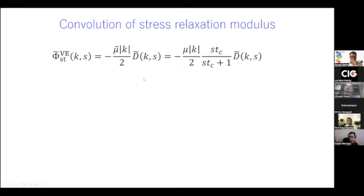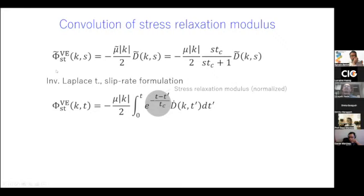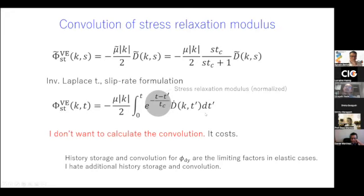The question is how to calculate the static stress change in the viscoelastic medium. The standard way is to do the inverse Laplace transformation, and using a slip-rate formulation the stress change can be calculated via a temporal convolution of the slip-rate distribution with the stress relaxation modulus, where Tc is the relaxation time. But direct calculation requires temporal convolution and storing slip-rate history, which are the limiting factors defining the affordable problem size.